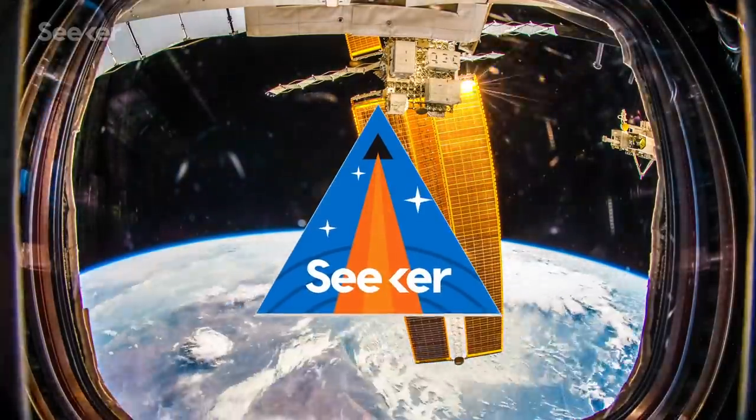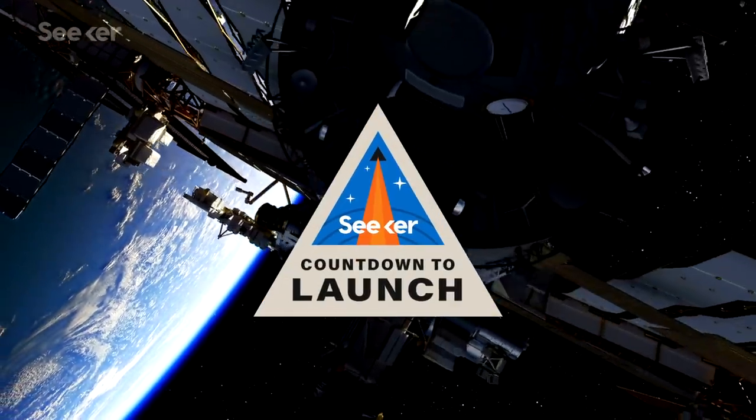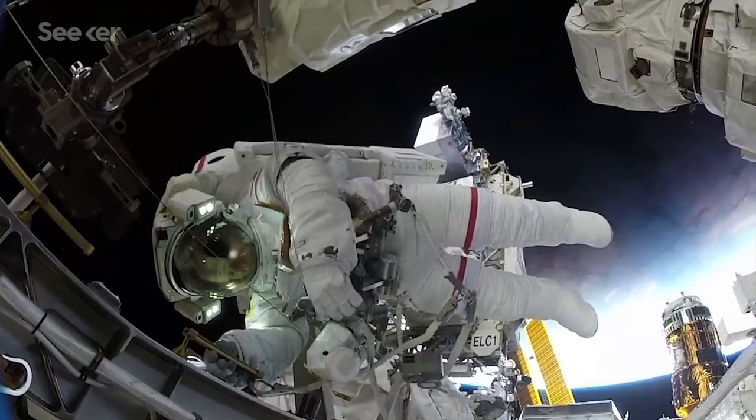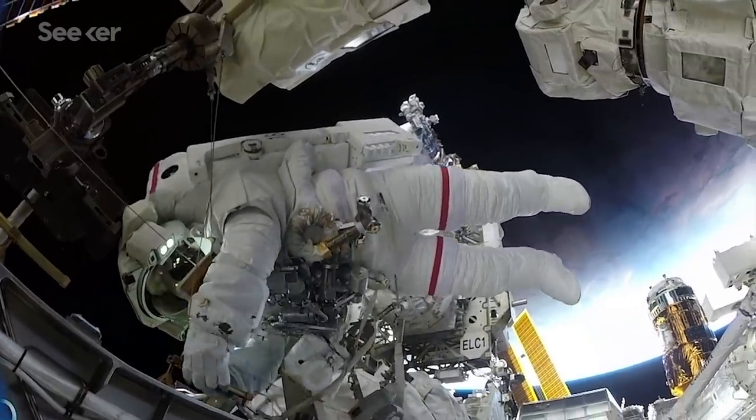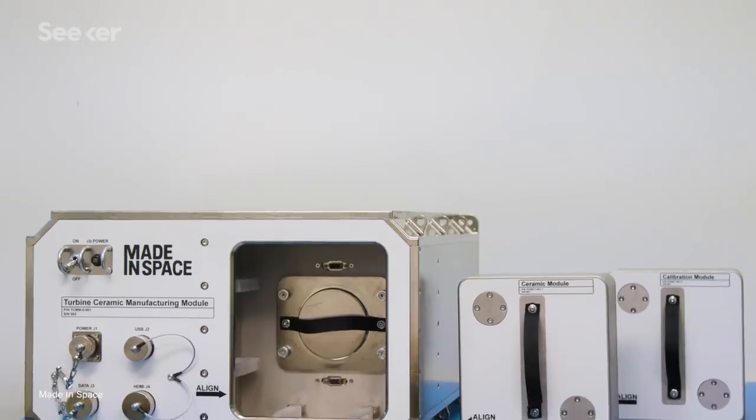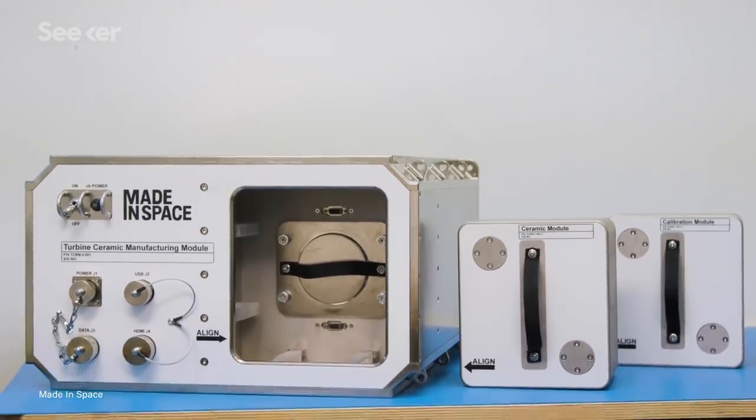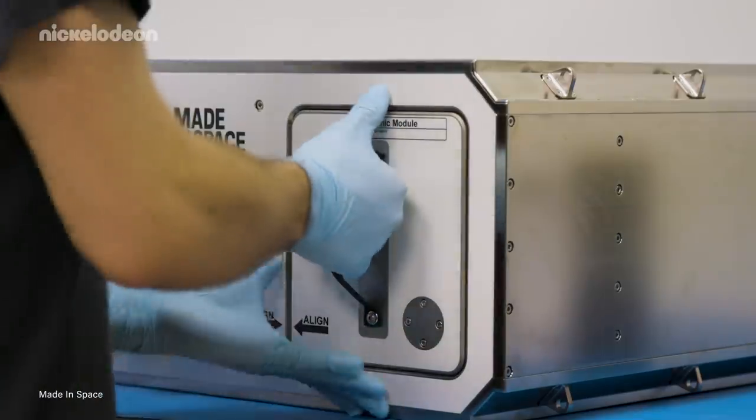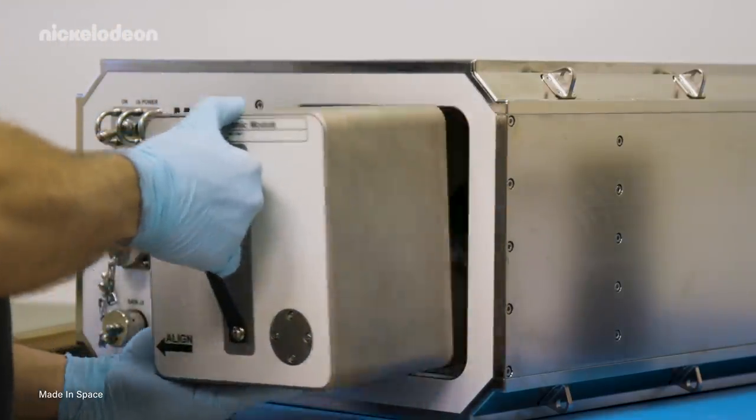The International Space Station is arguably the most unique laboratory known to man, equipped with some of the most advanced equipment ever made. But perhaps its most exciting new piece of equipment? A novel 3D printer that uses resin and light to create near-perfect ceramic pieces in microgravity.